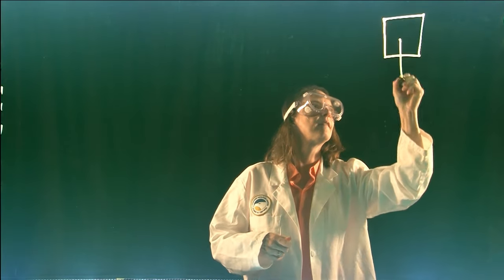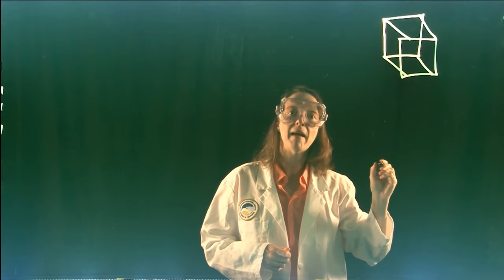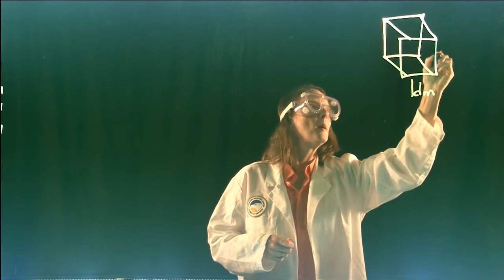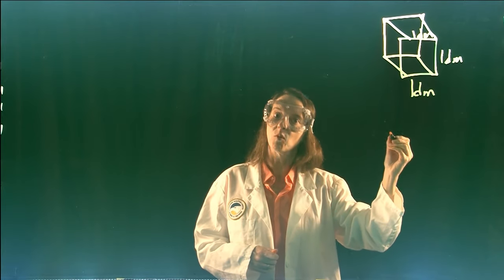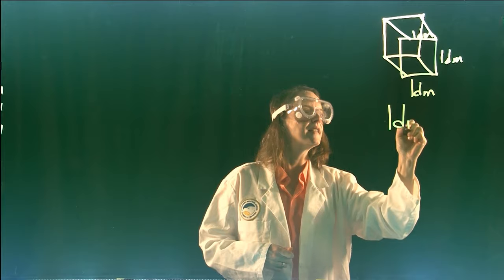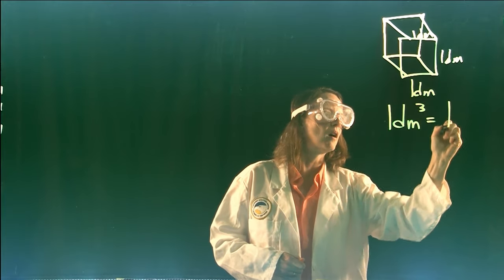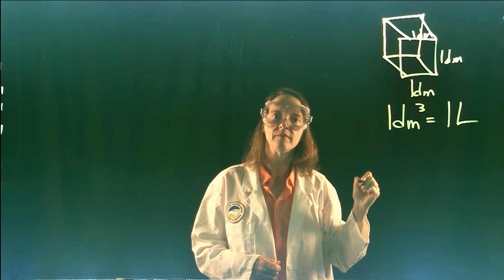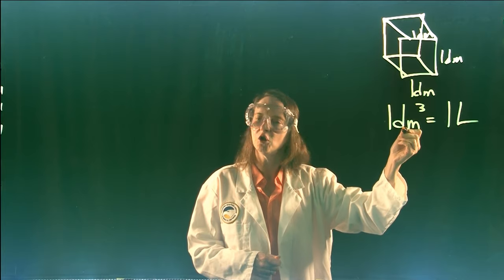Cubed units of length are units of volume. If you consider a cube that measures one decimeter by one decimeter by one decimeter, length times width times height, that is a cubic decimeter. And that corresponds to what we call a liter. A unit of volume is just a unit of length cubed.